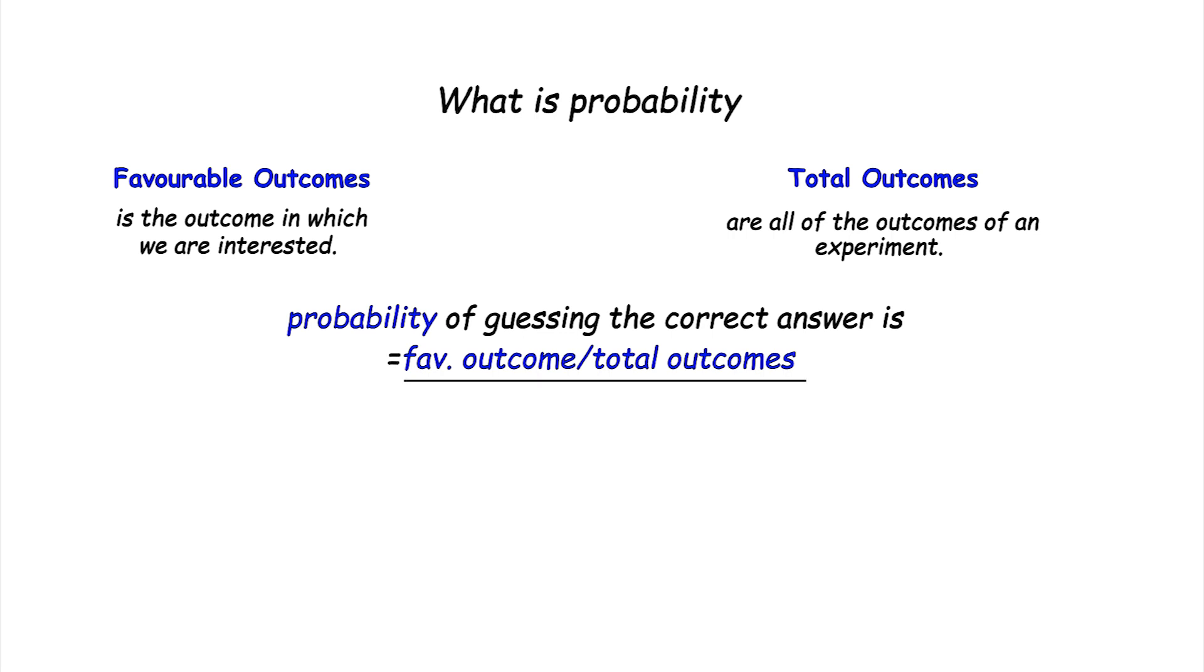Here, favorable outcome equals to one, as there is only one correct password, and total outcome equals to thousand, as there can be a thousand possible passwords. So the probability is one divided by thousand, which is 0.001. So his probability of guessing the correct answer is one by thousand, which is very low.